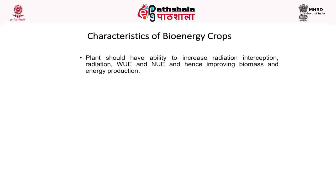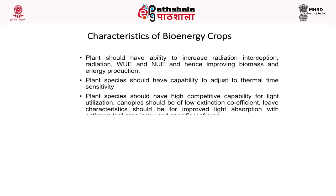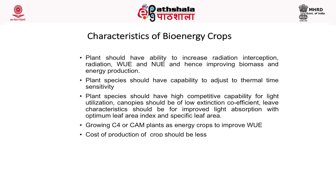Plants should have the ability to increase radiation interception, water use efficiency, and nutrient use efficiency to improve biomass and energy production. Plant species should be capable of adjusting to thermal time sensitivity and have high competitive capability for light utilization. Canopies should be of low extinction coefficient and should have leaf characteristics with improved light absorption and an optimum leaf area index and specific leaf area. Growing C4 and CAM plants as energy crops can improve water use efficiency, and the cost of production should be low.